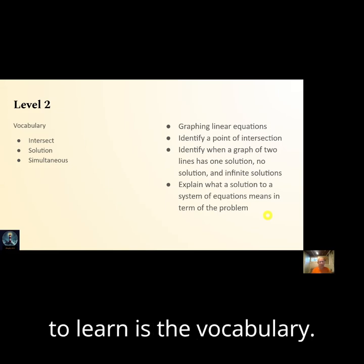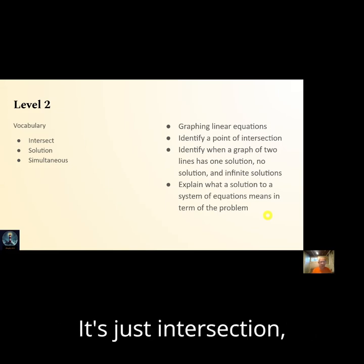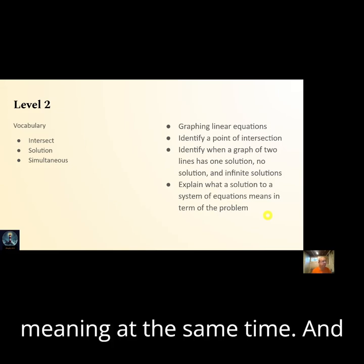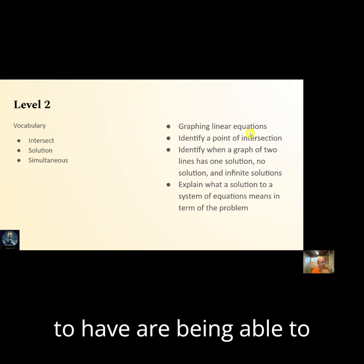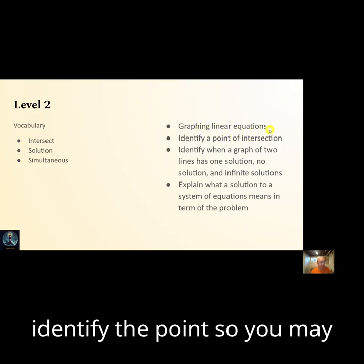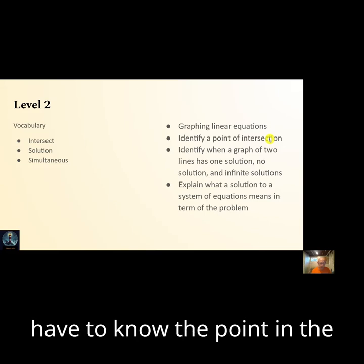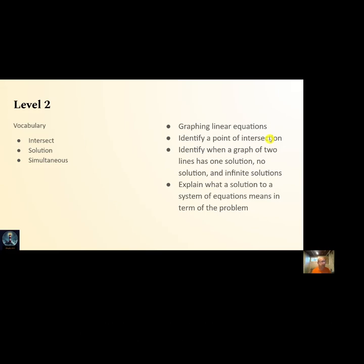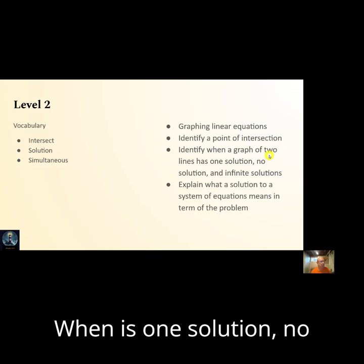All right, so the first thing you'll have to learn is the vocabulary: intersection, solution, and simultaneous, meaning at the same time. And skills you're going to have to have are being able to graph linear equations, identify the point so you may have to know the point in the correct order x and y, when is one solution, no solution, or infinite solutions, and then explain what it means in a word problem.